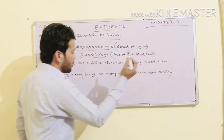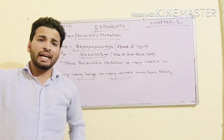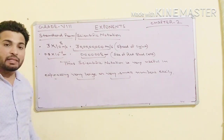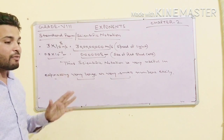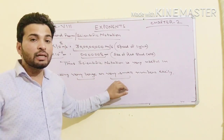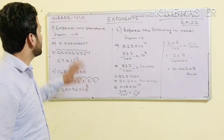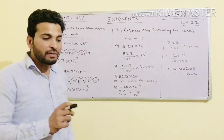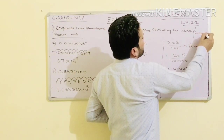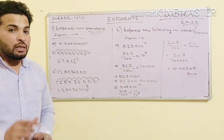Scientific notation is very useful for expressing very large or very small numbers easily. If you want to write 30 crore with all the zeros, it becomes difficult. We can simply write 3 × 10⁸ meters per second. So today we'll do Exercise 2.2. There will be two kinds of questions: one to convert into standard form and one to convert into the usual or general form.